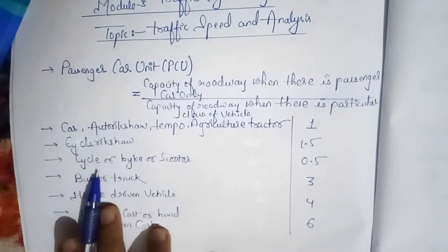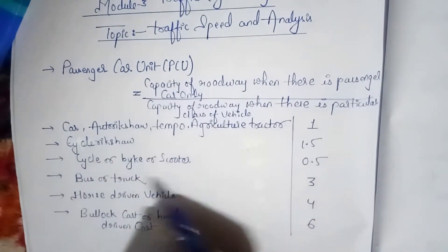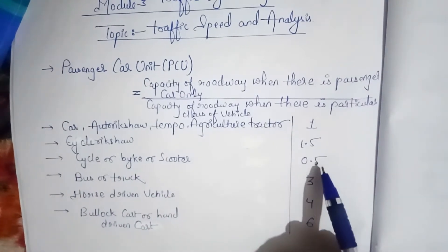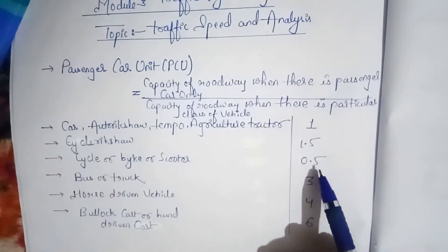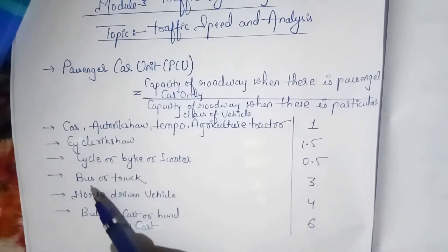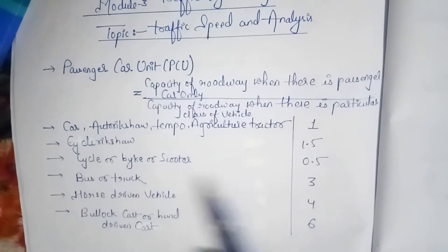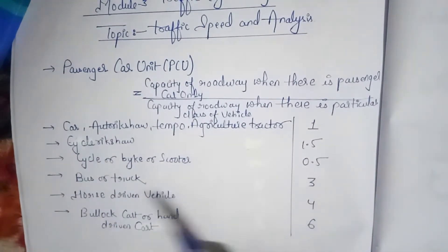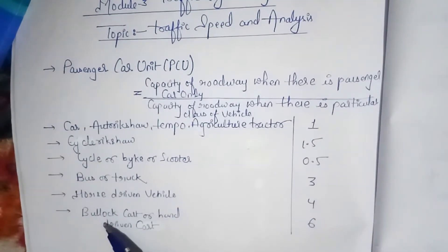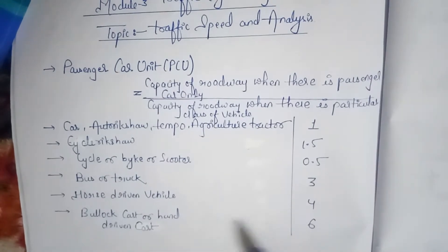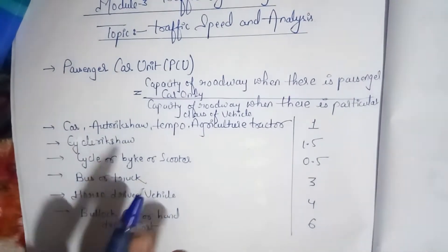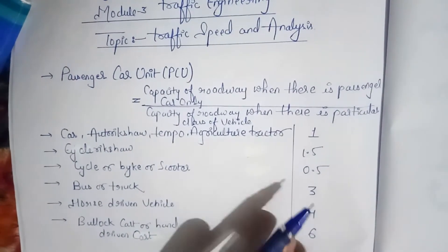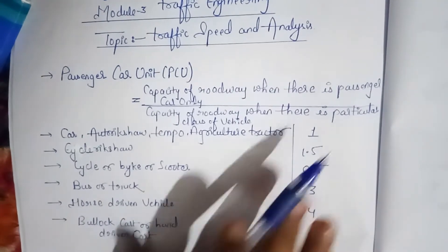For two-wheeler vehicles — for example cycle, bike, scooter — the PCU value is 0.5. For bus and truck, the PCU value is 3. For horse-driven vehicles it is 4, and for bullock cart and hand-driven cart the value is 6. These are the important PCU values asked directly in state level competitive exams.